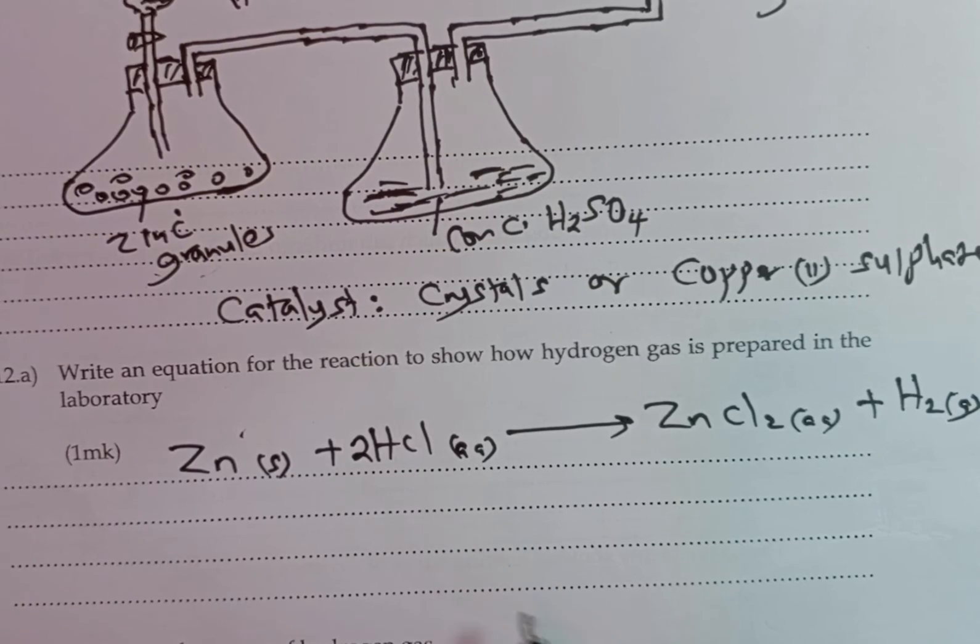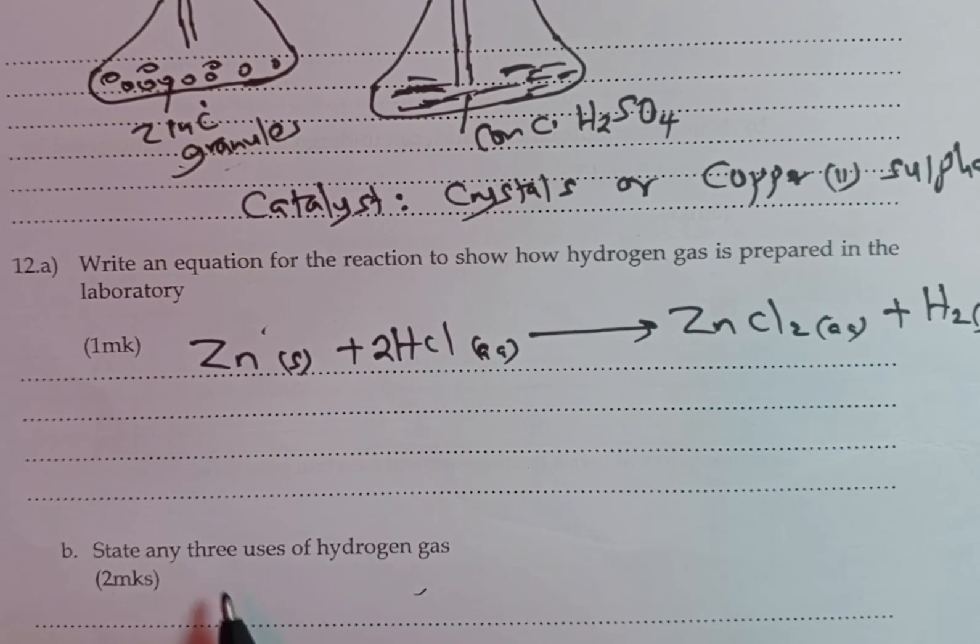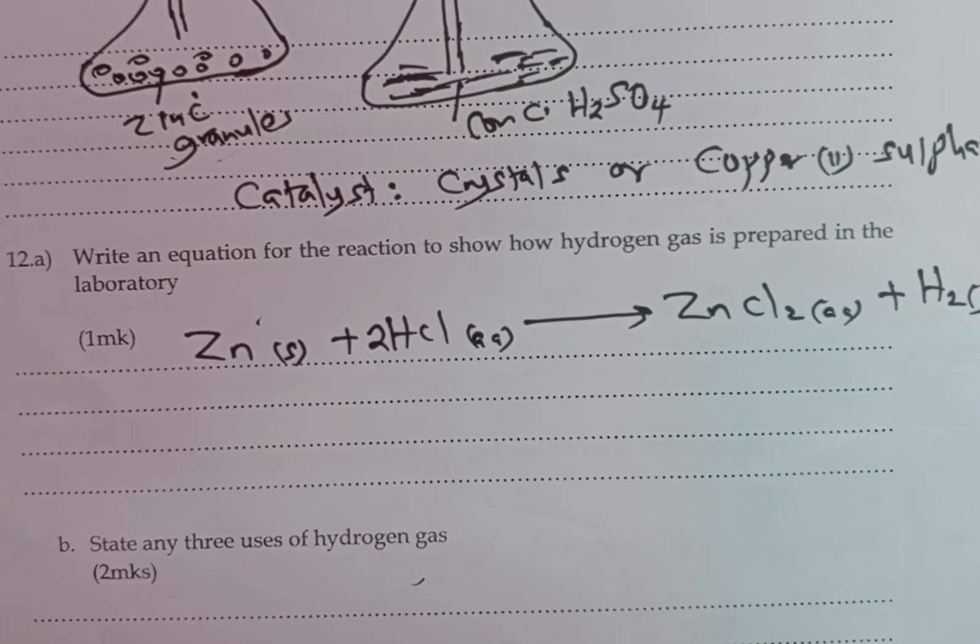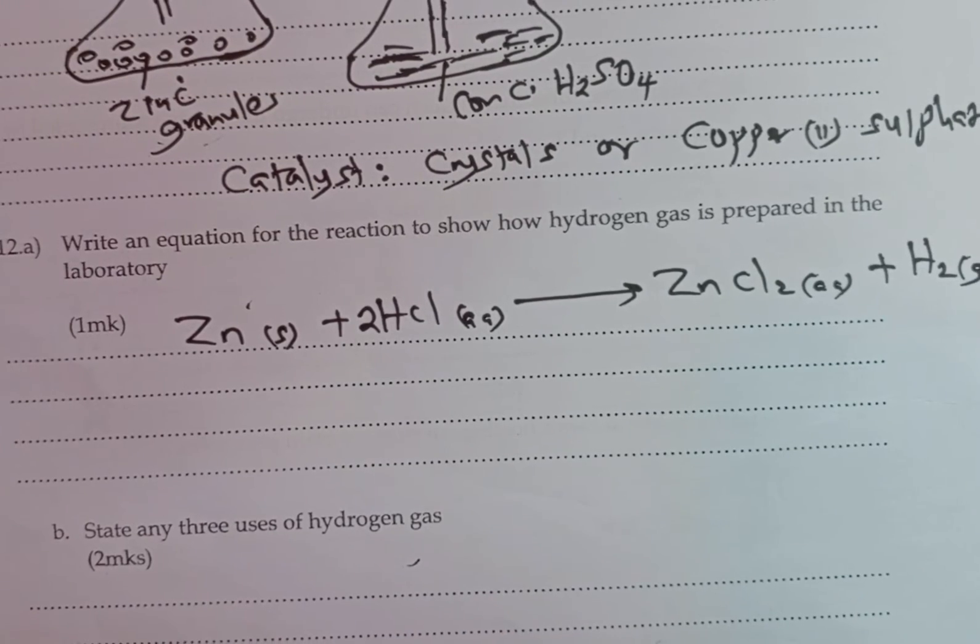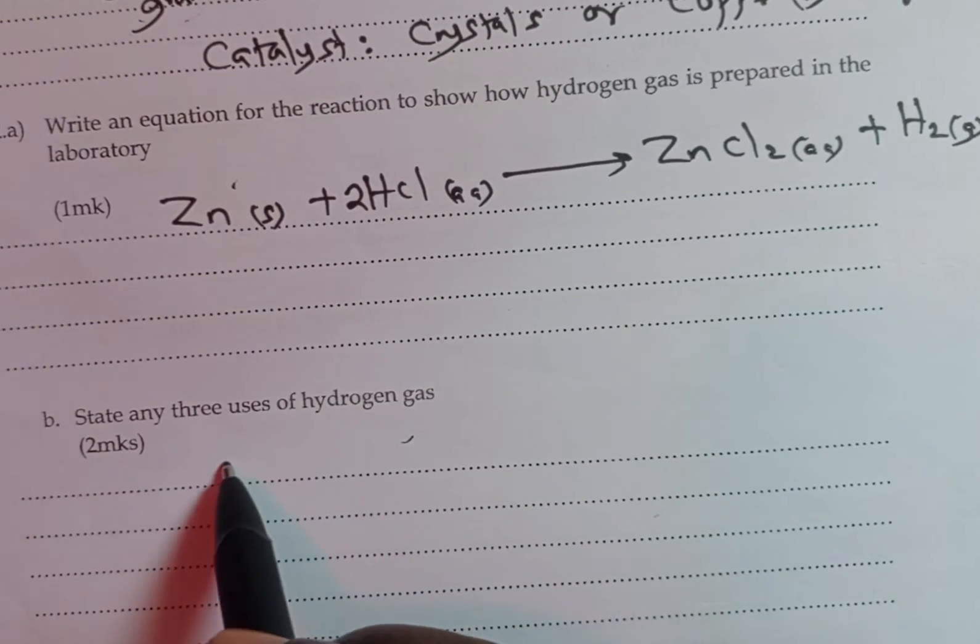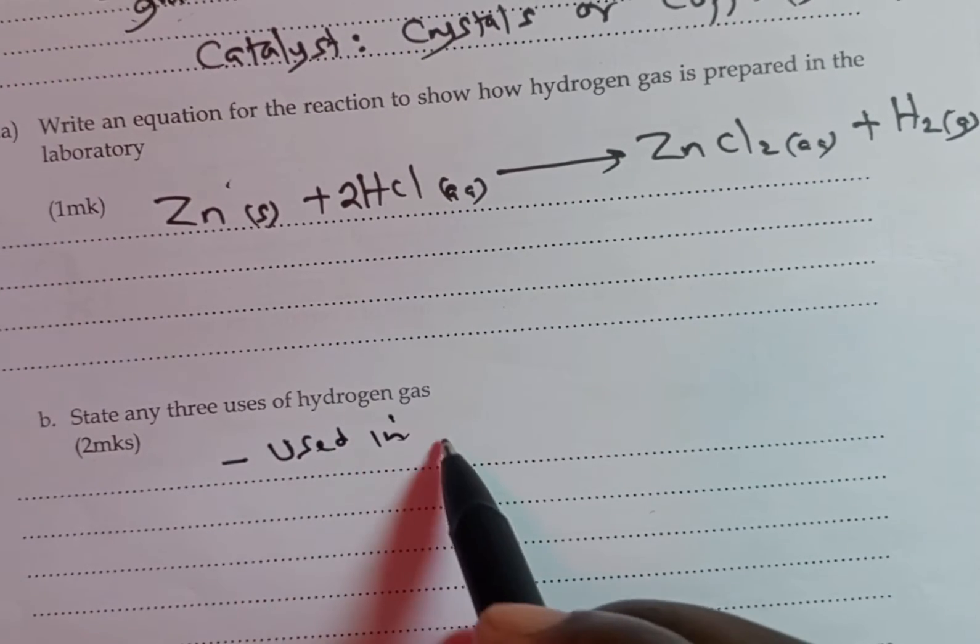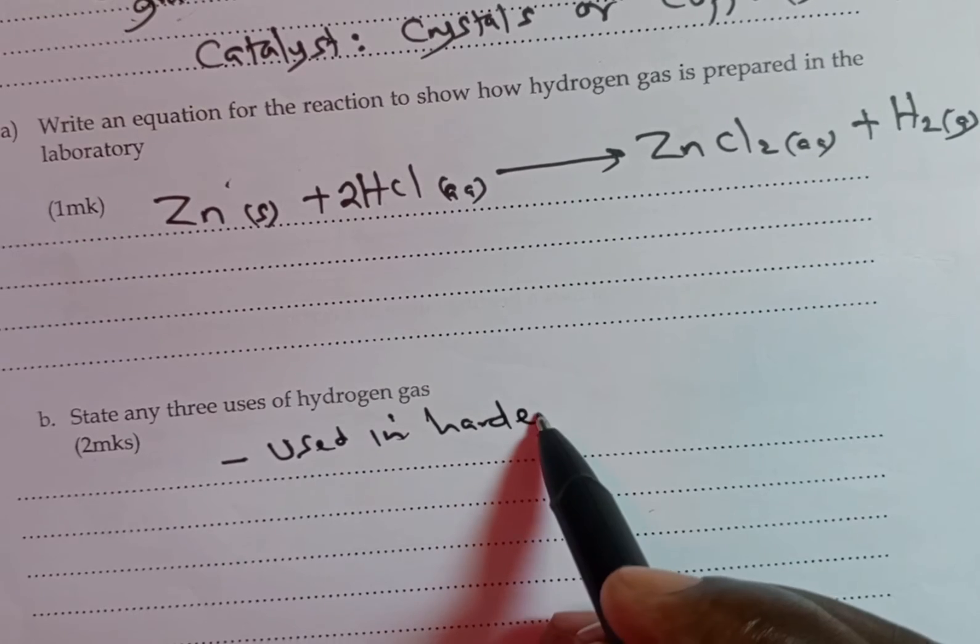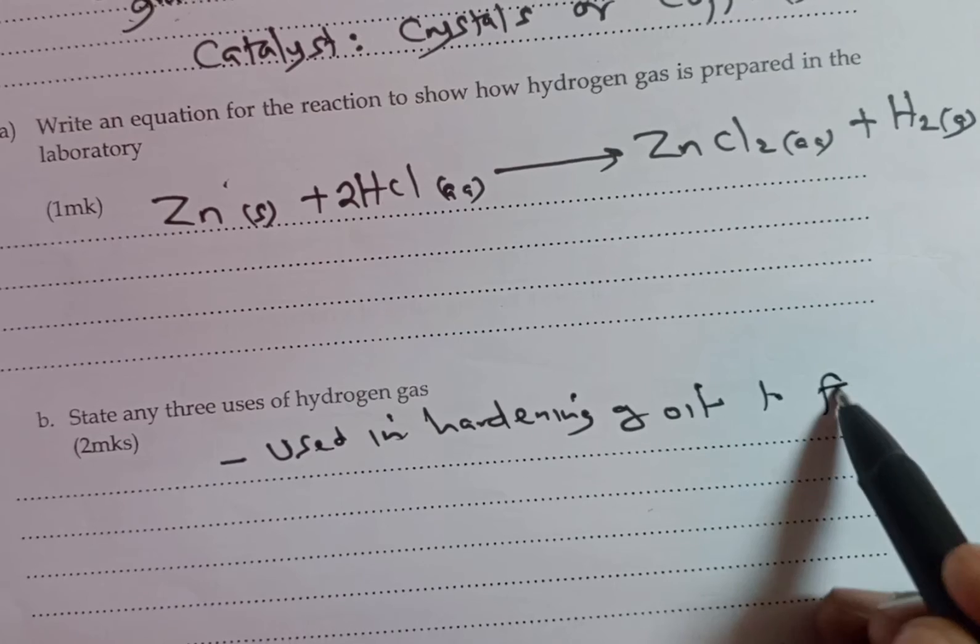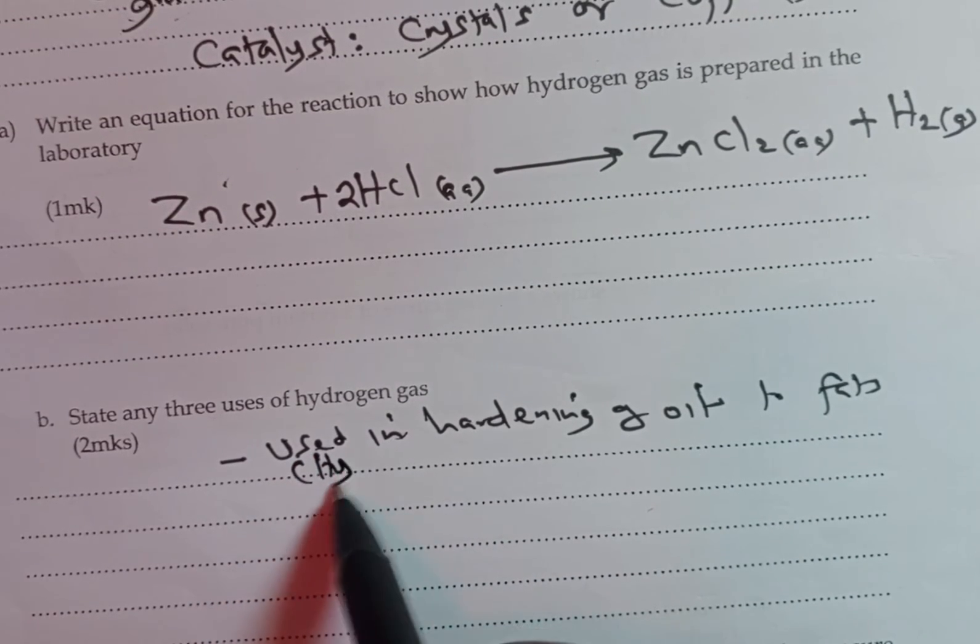Another question we have, which is part B: state any three uses of hydrogen. Hydrogen has several uses. One is being used in hardening of oils to fats, a process we call hydrogenation.